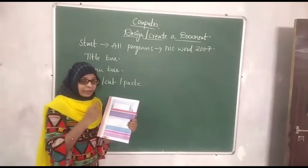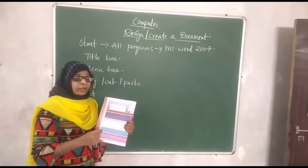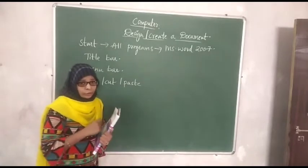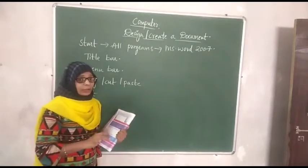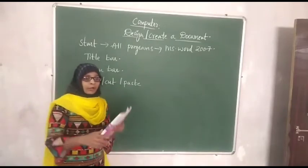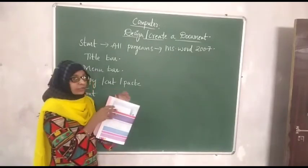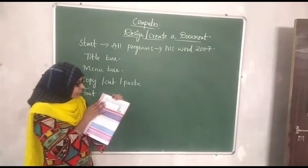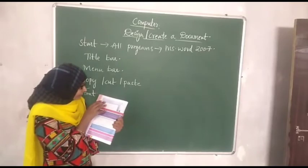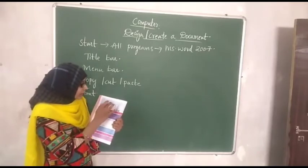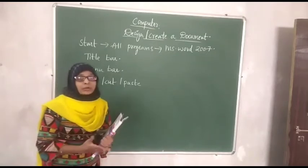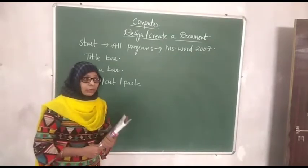Depending on your needs, you can utilize each and everything here. The ribbon is where you can use all the things you want. Just as you write in your notebook with pencil and eraser, here you don't use pencil and eraser — you type using the keyboard. You can also use the mouse if you want to use any of these options. Here font, color palette, and font size are given.